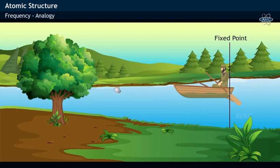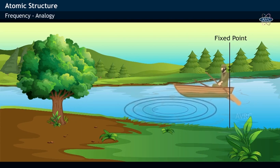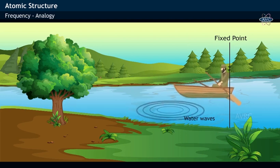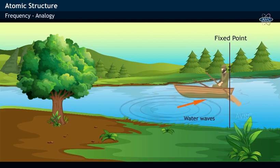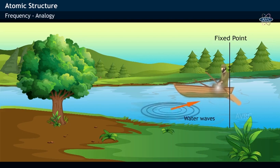When a stone is dropped into the pond at the point of its contact with water, a disturbance is created and it is propagated as water waves. These water waves spread across water and finally reach the man sitting in the boat.